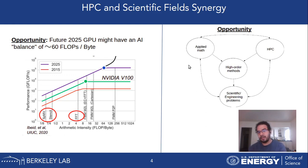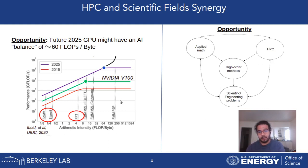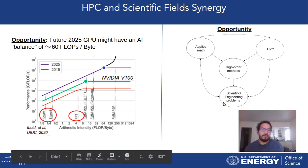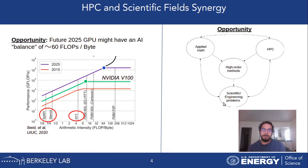This is a good opportunity to connect many fields. Applied mathematicians are developing high-order, accurate, stable, and conservative numerical methods. HPC specialists deal with new architectures — CPUs and GPUs — identifying the main operations and how to improve them. And finally, we have the scientific and engineering problems where we want solutions as close to reality as possible.